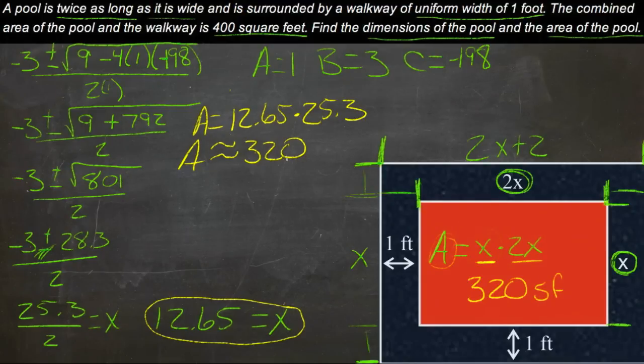And then the dimensions of our pool we already got are 12.65 this way, and 25.3 this way. And that's it. We got it.